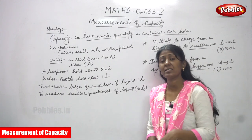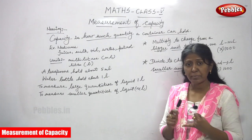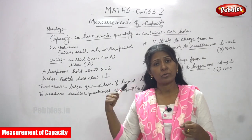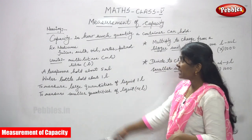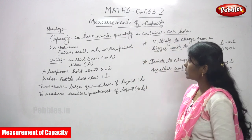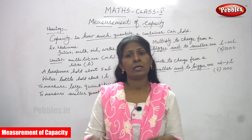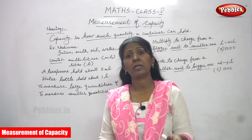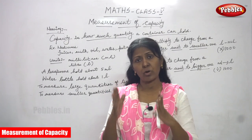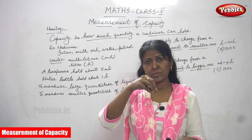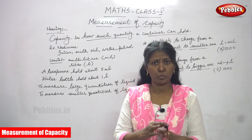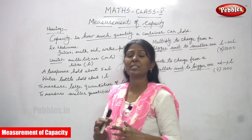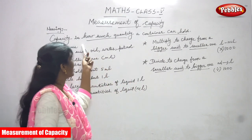Now we are going to see measurement of capacity, which is another physical quantity. Already we have seen measurement of length and measurement of mass. The third physical quantity is measurement of capacity. Capacity means how much quantity a container can hold. We mostly use capacity for liquid items — for example, milk, water, juices, oil, and petrol — everything we pour and keep in a container. So that is what capacity means: how much quantity a container or vessel can hold.